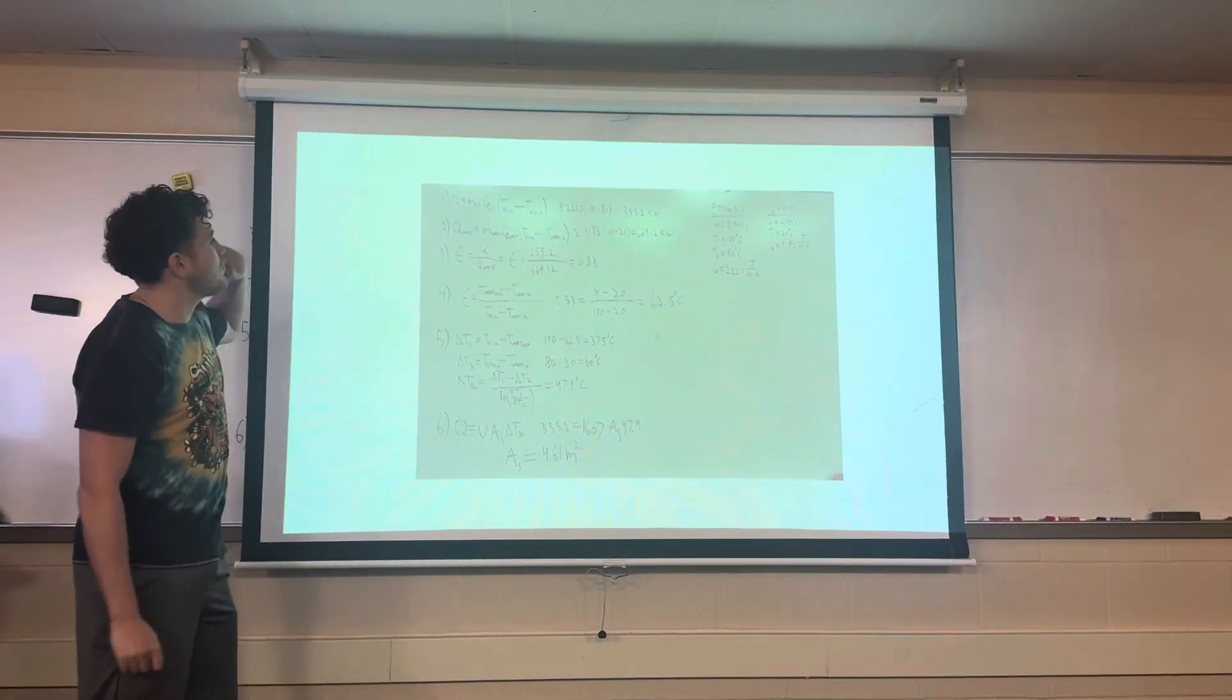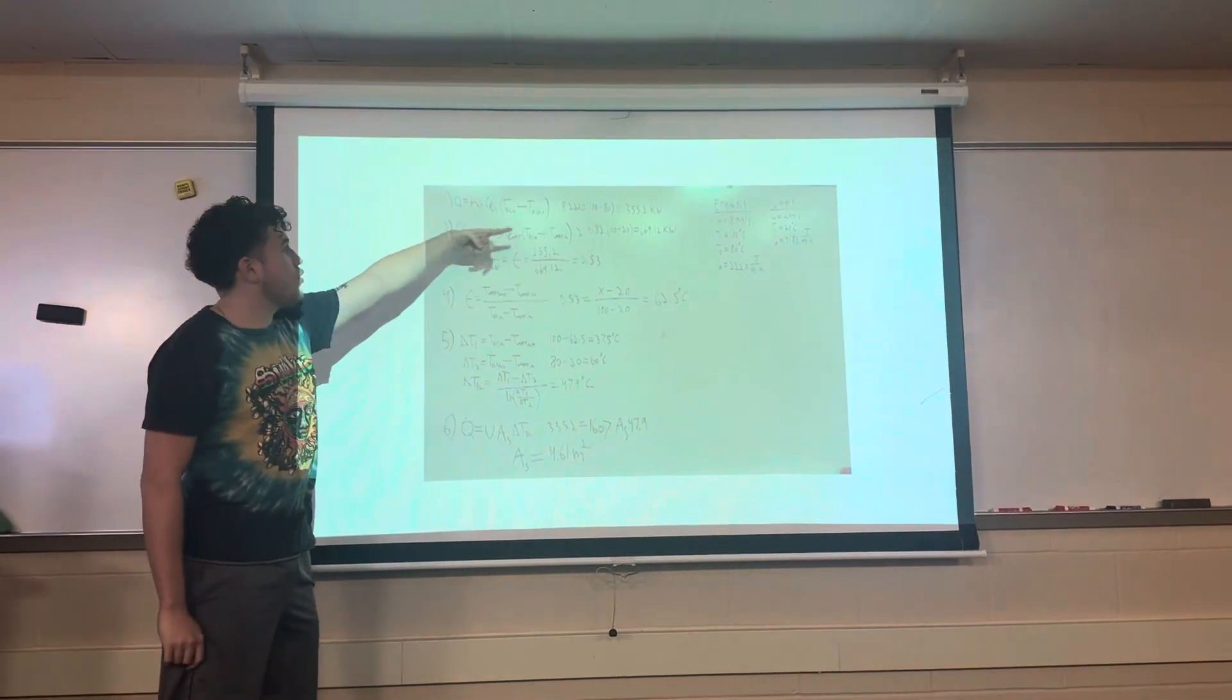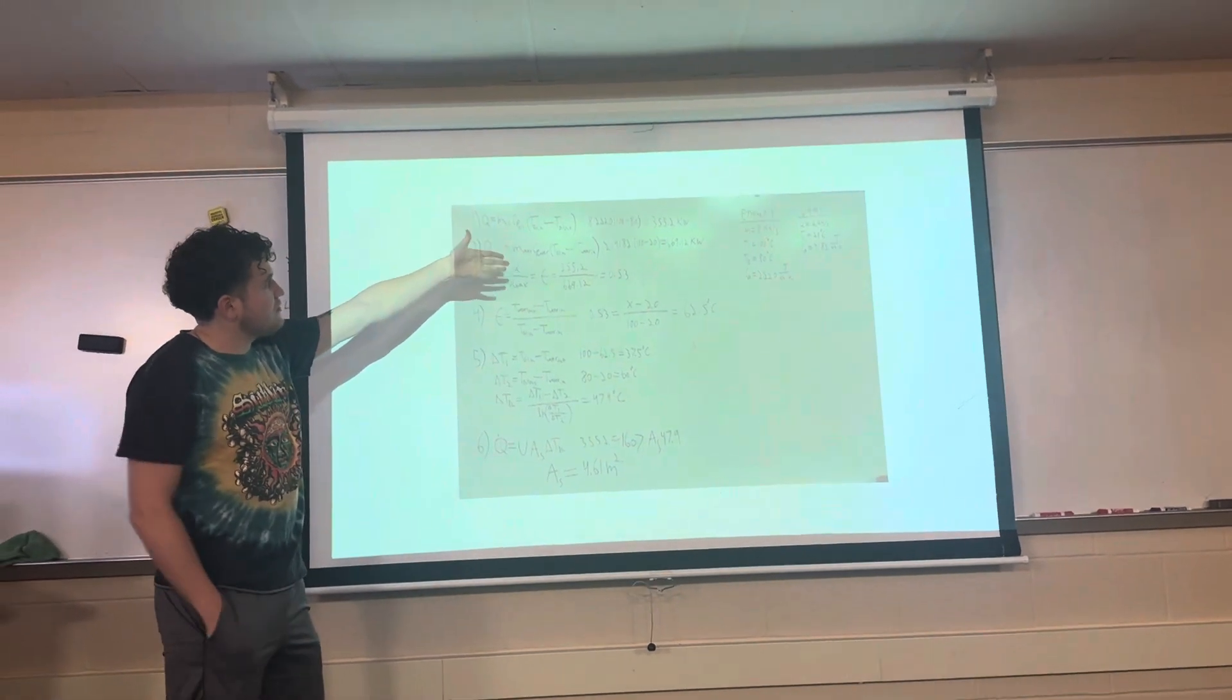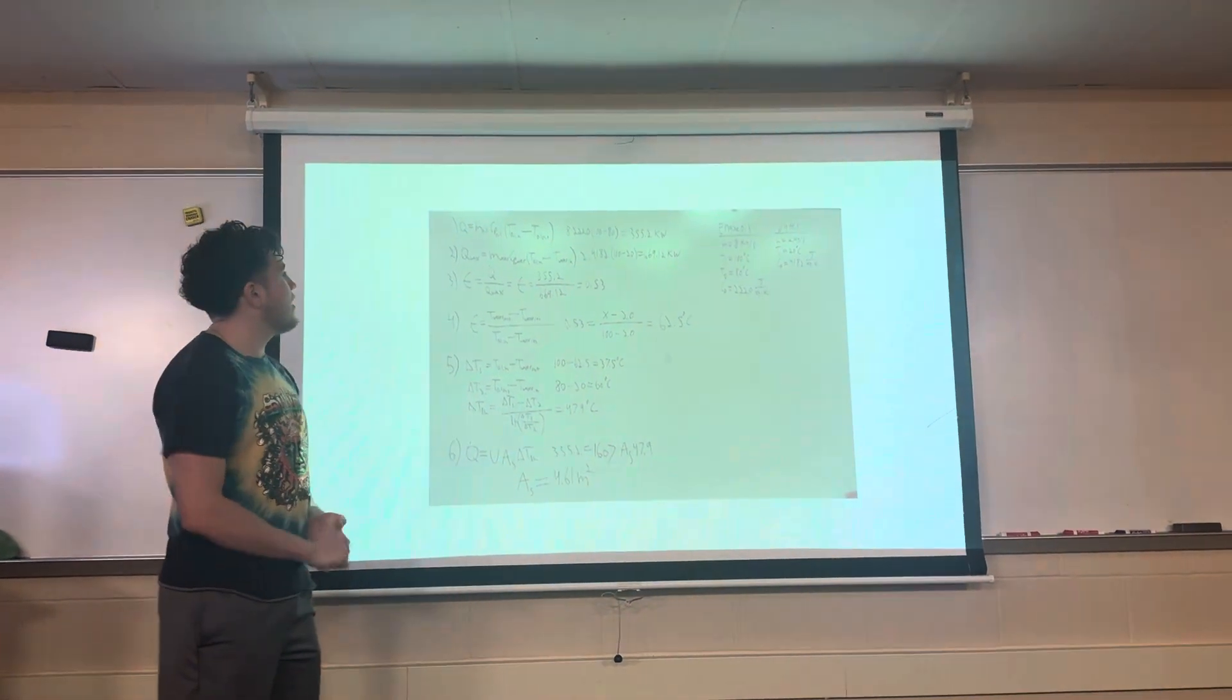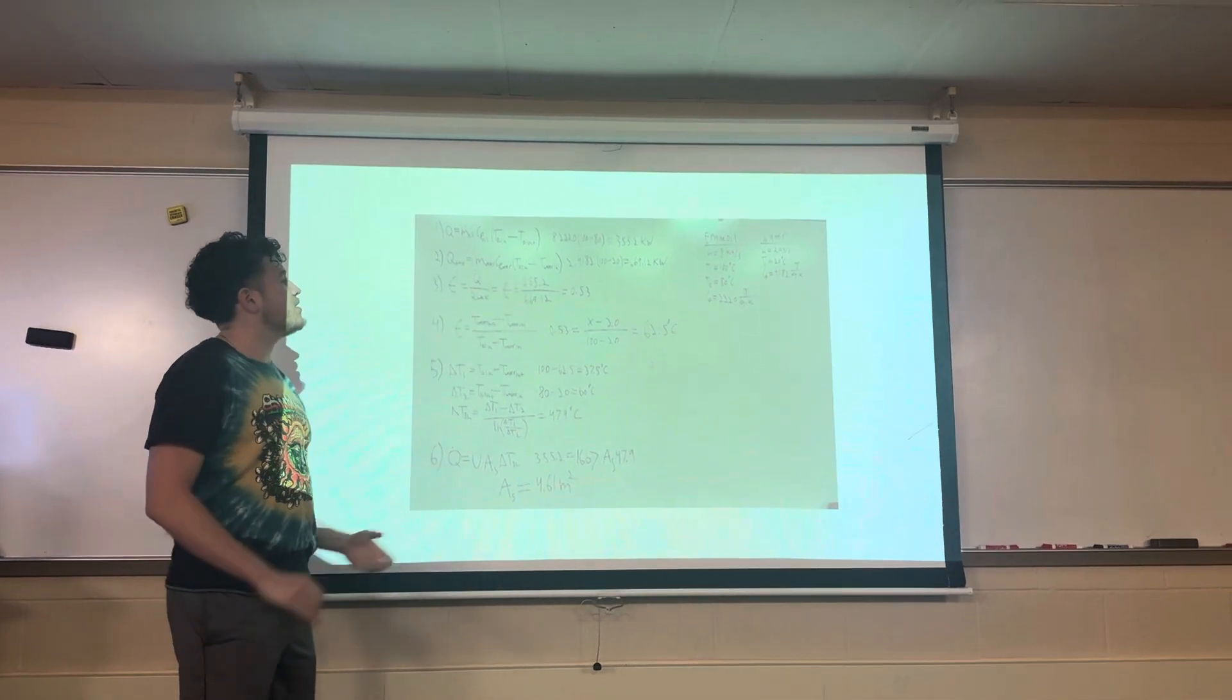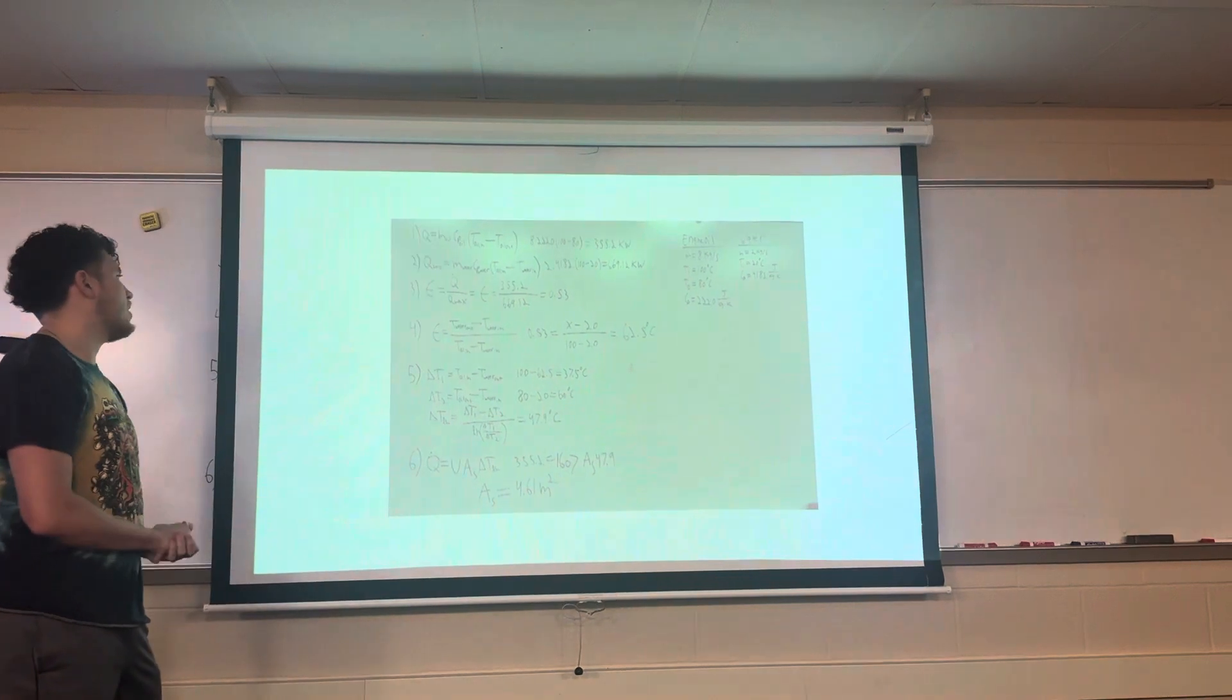First we solve for the heat transfer rate or Q dot. This is done with our properties of the oil. We end up with 355.2 kilowatts. Then we solve for Q max. This was evaluated with our water and the oil in minus the water in. This gives us 669.12 kilowatts.